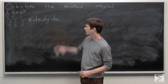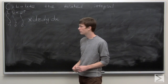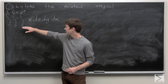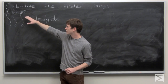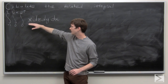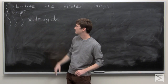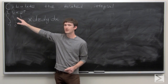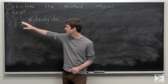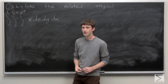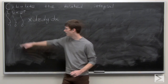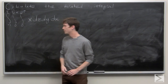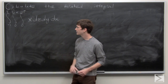In this problem, we're asked to calculate the iterated integral. The first integral is from 0 to e to the y of x dz. Then we're going to integrate that from 0 to ln x with respect to y. And finally integrate from negative 1 to 1 dx.